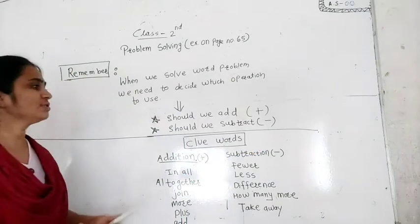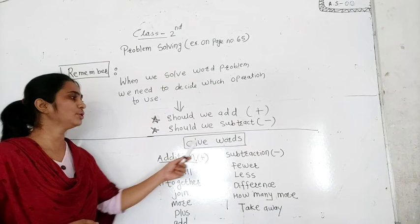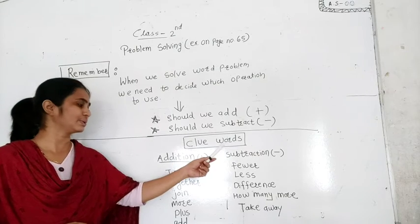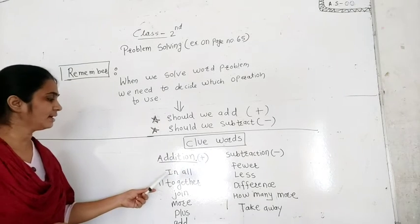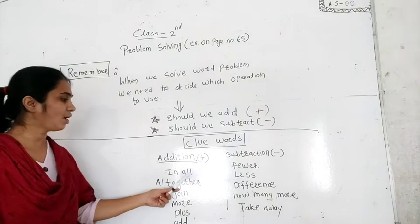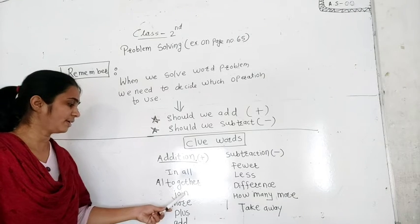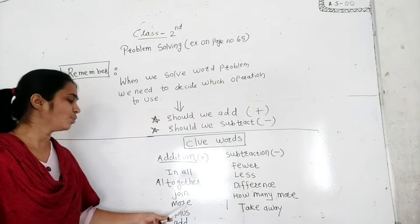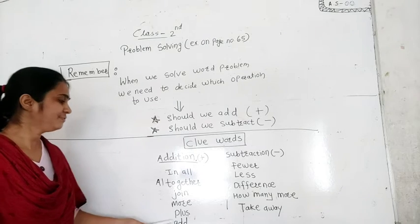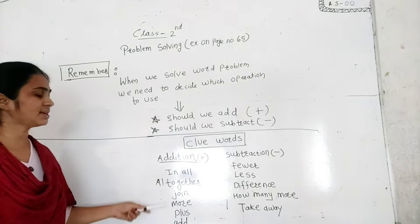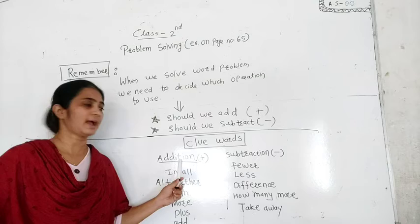Before solving the word problem, some new words are also given. These words are: in all, altogether, join, more, plus, and add. If these words are in the problem, you have to do the addition.